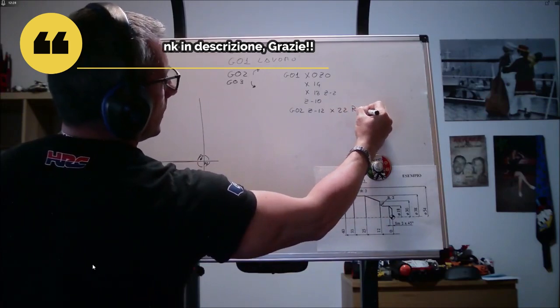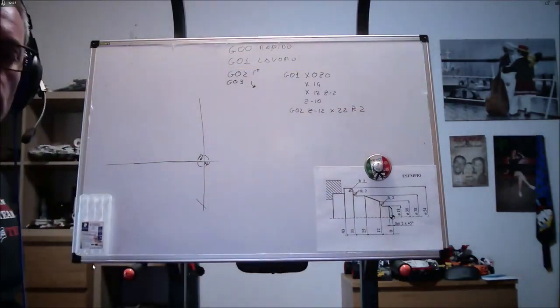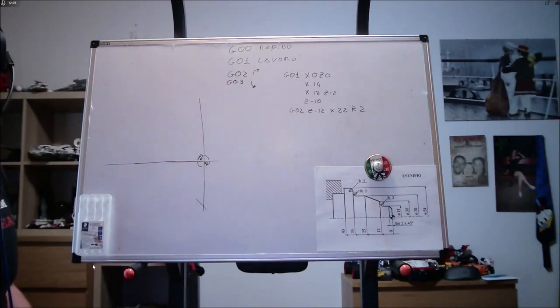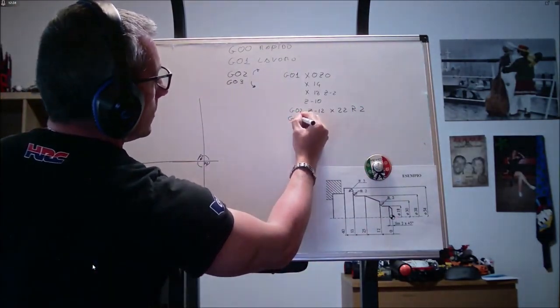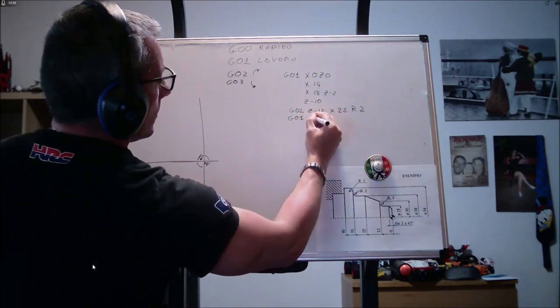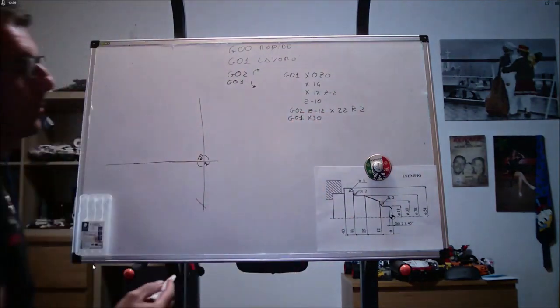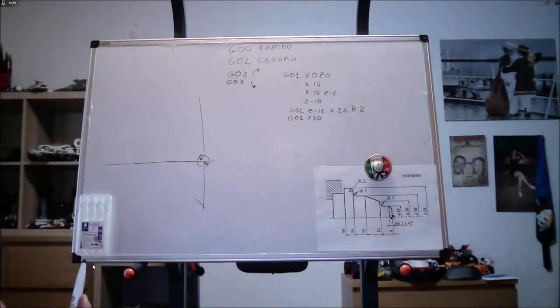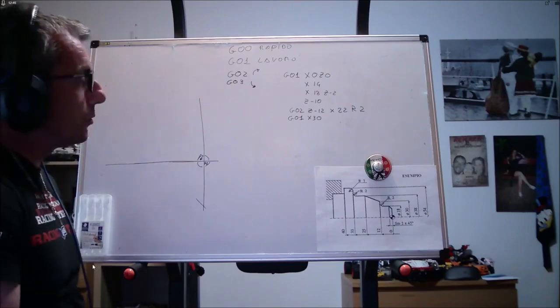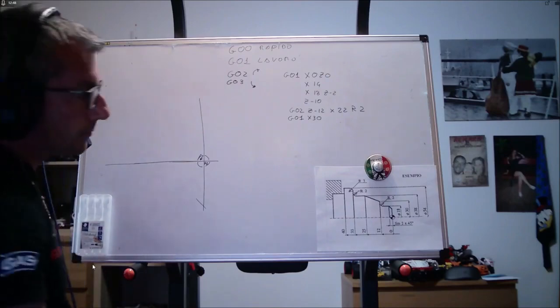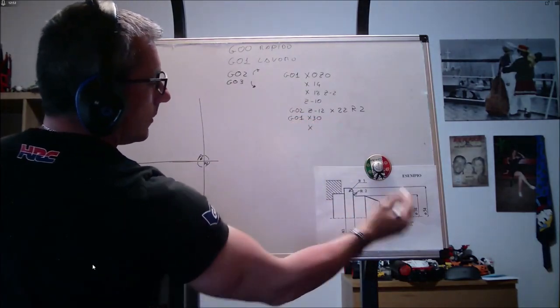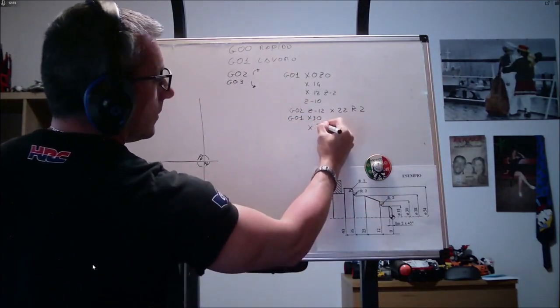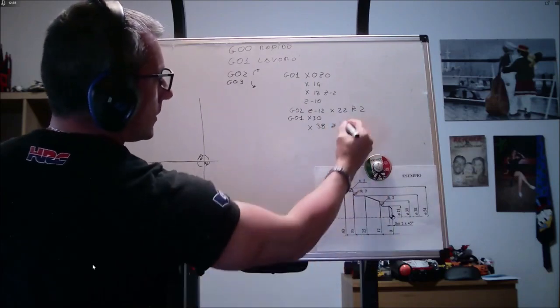Ora, g02, z meno 12, x non 18, ma tenete conto che è un diametro, 22, r e 2. Allora, questo è il punto finale, incluso di raggio del pezzo. Ora, io devo andare a x30. Se non metto g01, la macchina pretenderà nuovamente un raggio. Quindi, devo escludere il mio g02 e inserire il g01. A questo punto, il g01 resta inserito, x38, z meno 25.